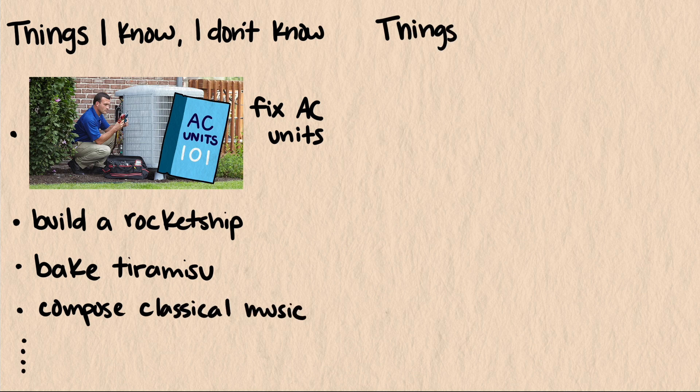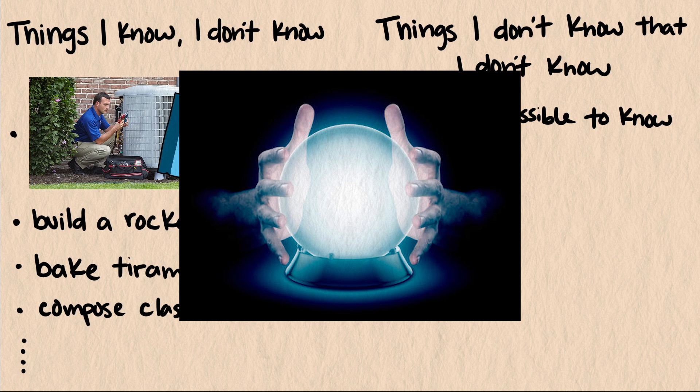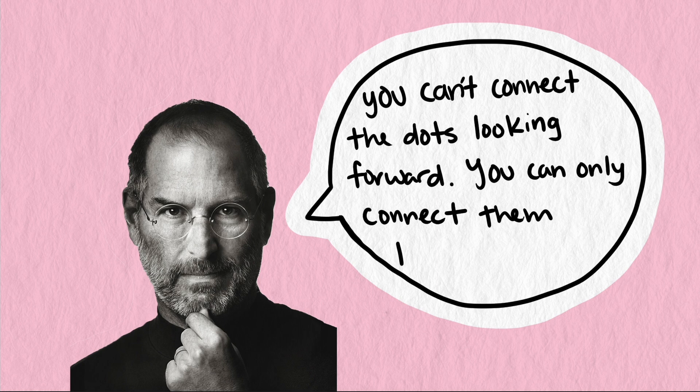But what about the things we don't know that we don't know? We can't make this list because as soon as we recognize that we don't know something, it moves to the I know I don't know this category. There's no way to know what we don't know and very hard to predict what knowledge might be useful to us in the future. Steve Jobs put it this way: you can't connect the dots looking forward. You can only connect them looking backwards.